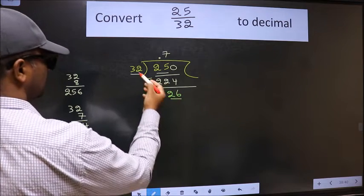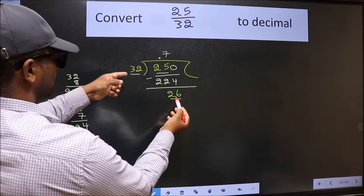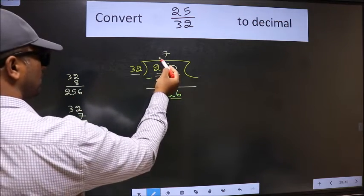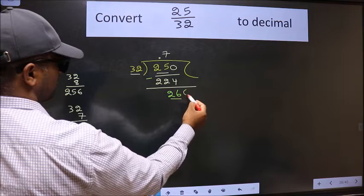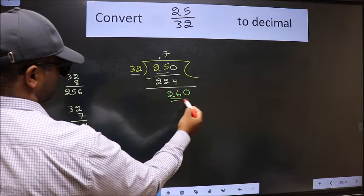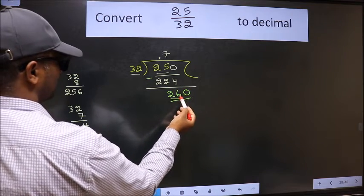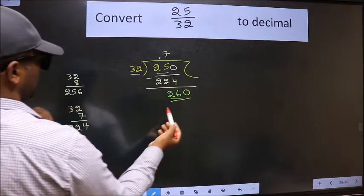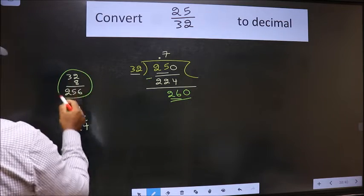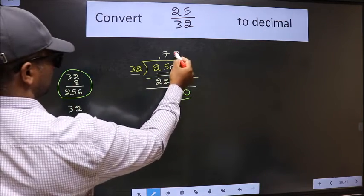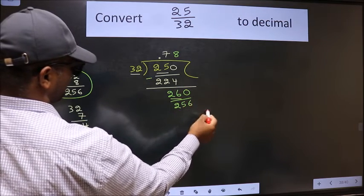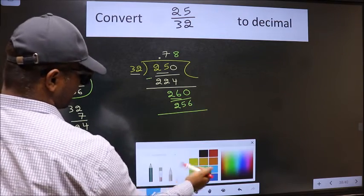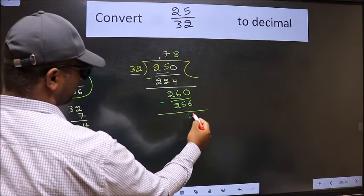Now 26, 32. 26 is smaller than 32, and we already have the decimal, so directly take 0. So 260. A number close to 260 in the 32 table is this one: 32 times 8 is 256. Now we should subtract. We get 4.